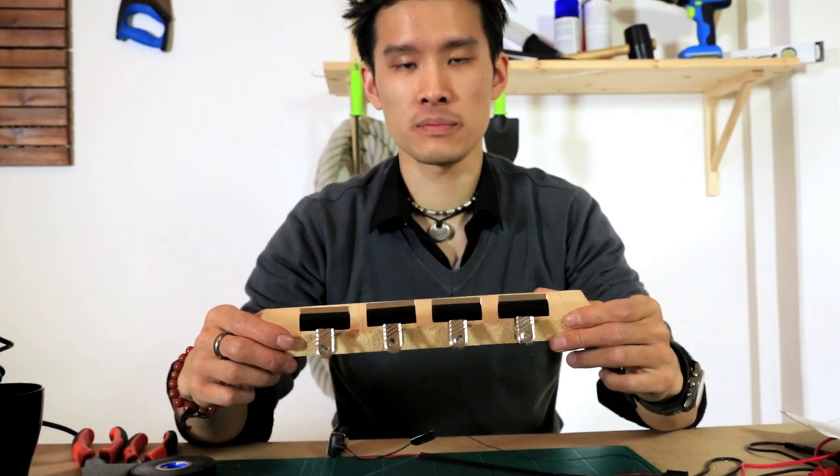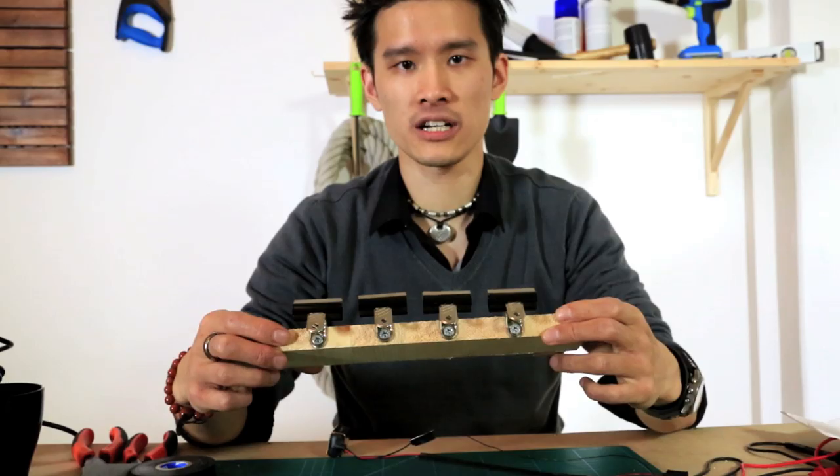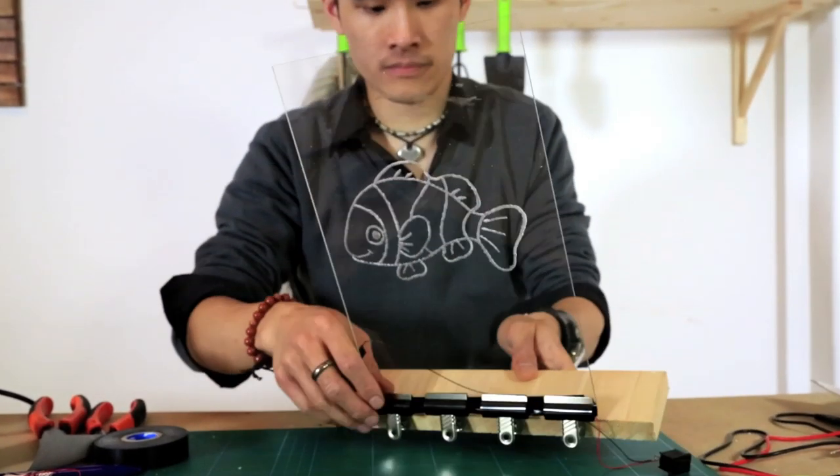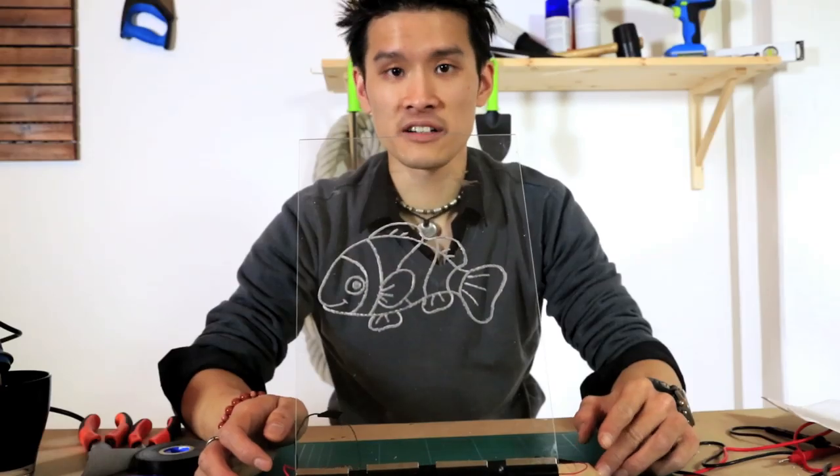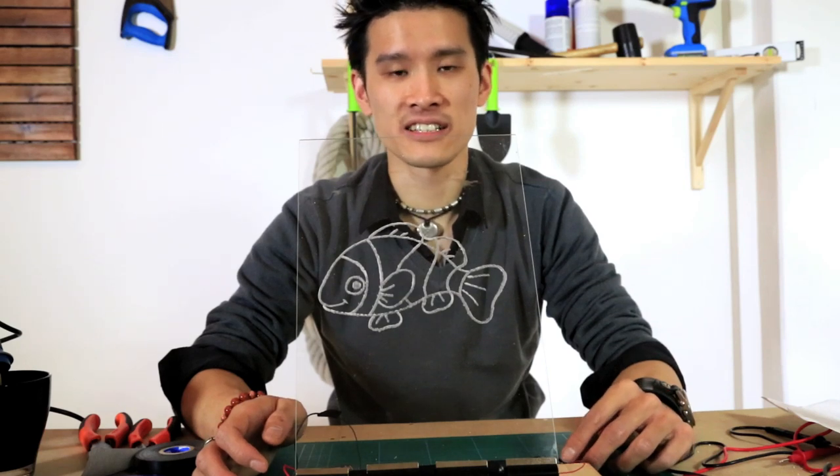And then with a bit of cleaning up, we'll be ready to display it. And there we go. I've just made a stand for the sign with a piece of wood and four binder clips screwed to it. And there you go. That's how you make an LED edge-lit sign.